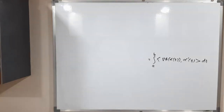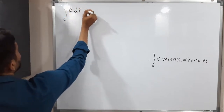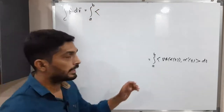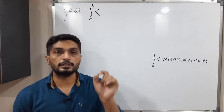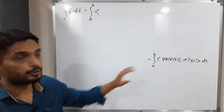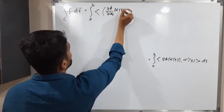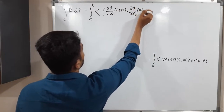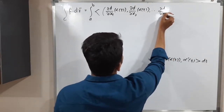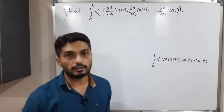Let us simplify further. We write the integral from a to b of the inner product of del phi, where del is the operator defined as (∂/∂x₁, ∂/∂x₂, ∂/∂x₃, ...). So we expand del phi(alpha(t)) as the vector with components ∂phi/∂x₁(alpha(t)), ∂phi/∂x₂(alpha(t)), and so on up to ∂phi/∂xₙ(alpha(t)).